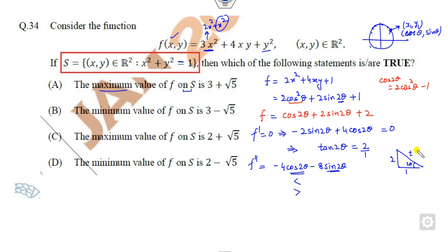So the value is ±√5. If you substitute the value here, what is the value of f? The value of cos(2θ) is 1/√5 + 2(2/√5) + 2. That is (4/√5) + 2, which is 2 + √5, one value.